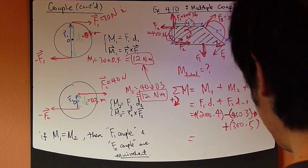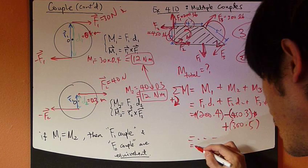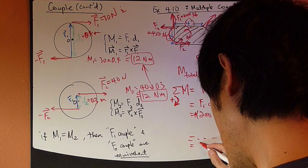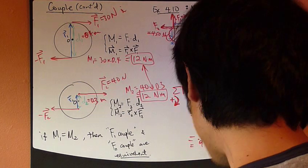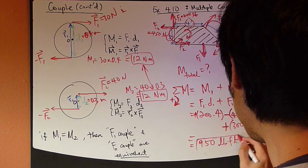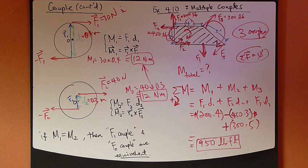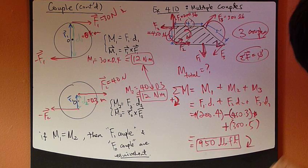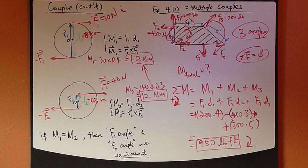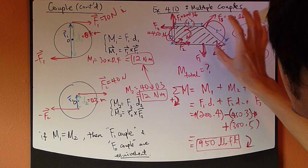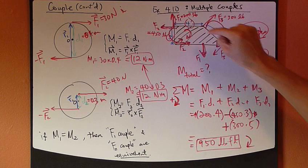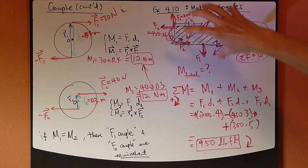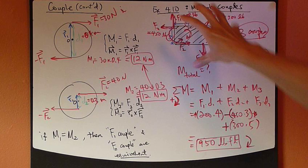So, crunch numbers. Whatever it is, just crunching calculators. In the end, it is 950 pound-feet. So, the positive number. Positive means clockwise. So, the final total moment created by these six forces, or created by these three couples, is 950 pound-feet, clockwise. So, the tendency to want to make this plate move clockwise is this much.